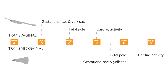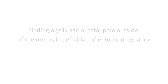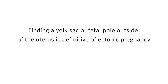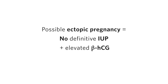In rare cases, you may be able to image a gestational sac containing a yolk sac or fetal pole outside of the uterus — this is definitive of ectopic pregnancy. However, more commonly, you will diagnose ectopic by finding no definitive IUP in the setting of an elevated beta-hCG.